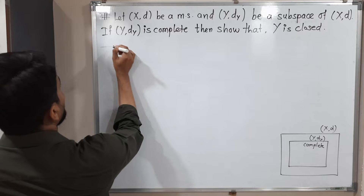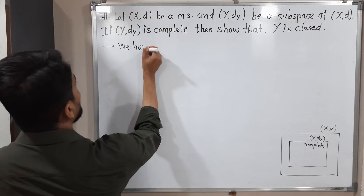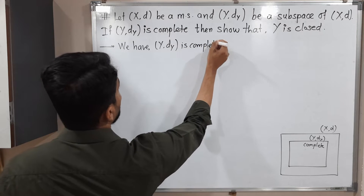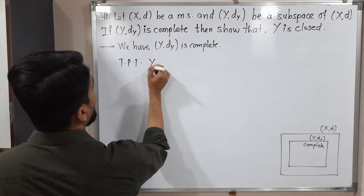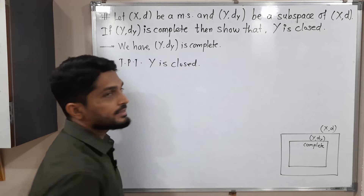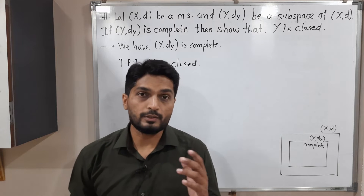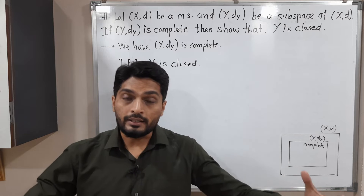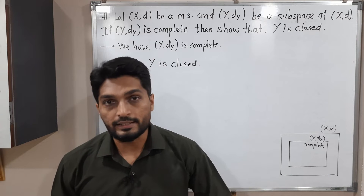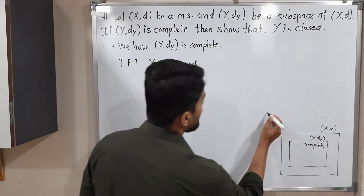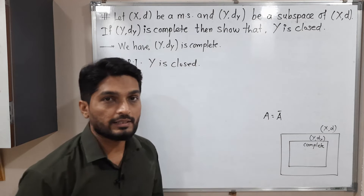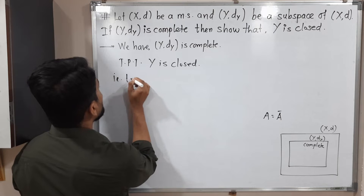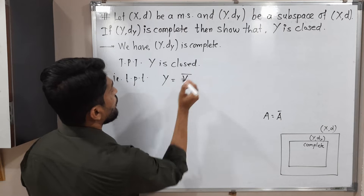So let us start to prove. Let me write the given information: Y,d_Y is complete. And what we have to prove: to prove that Y is closed. So tell me how to prove any set is closed. There are several methods. We can prove its complement is open — then it will be closed. The second way is you can prove it contains all its limit points. The third option is A equals A-bar. If you can prove this, then you can say the set A is closed. So I will follow this method. That is to prove that Y equals Y-bar.